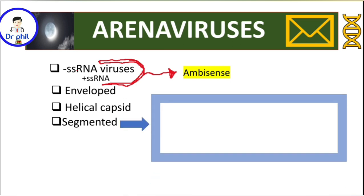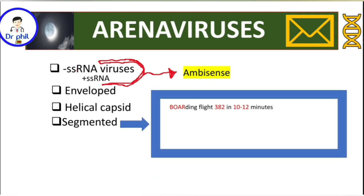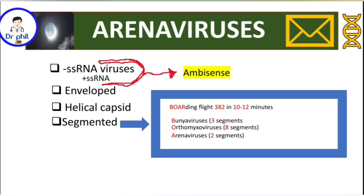This helix indicates that arena viruses have a helical capsid. Arena viruses are also segmented. Our mnemonic here: boarding flight 382 in 10 to 12 minutes — meaning Bunya viruses have three segments, Orthomyxo viruses have eight segments, arena viruses have two segments, and Reovirus has 10 to 12 segments. The number of segments is very important to know.